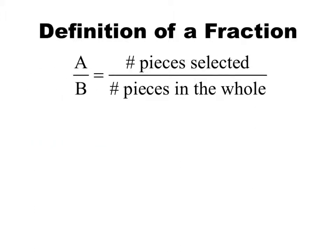We're going to start off by refreshing our memory on a couple of definitions. First is the definition of a fraction. A fraction starts off with a whole. We divide that whole up into several pieces, and that number of pieces becomes our denominator. Then we select several of those pieces, and that number becomes our numerator. So a fraction is about starting with the whole, breaking it up, and selecting a number of pieces — the number selected over the number in the whole.